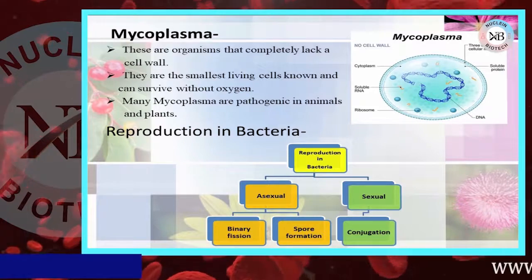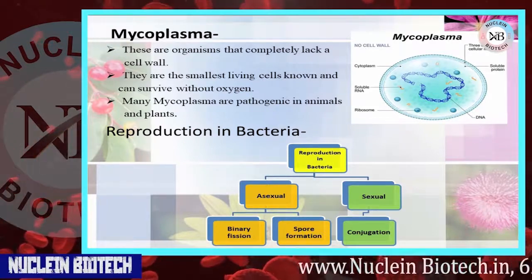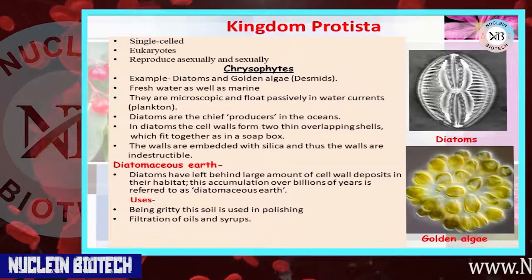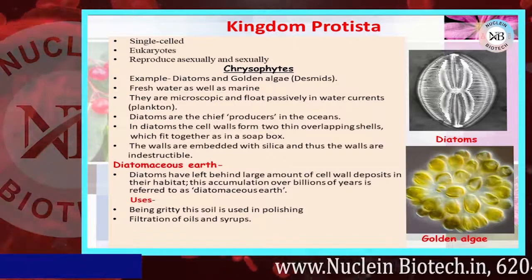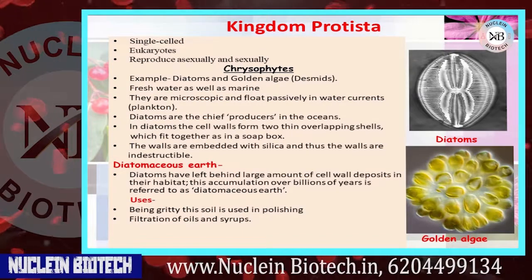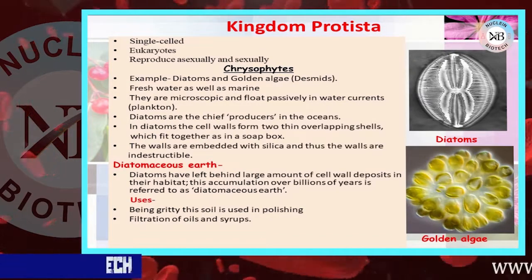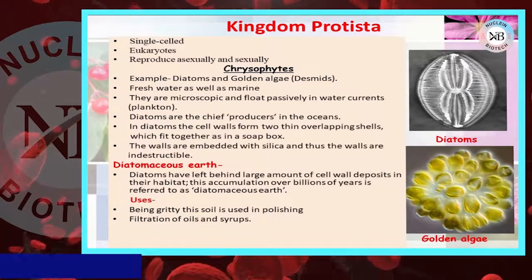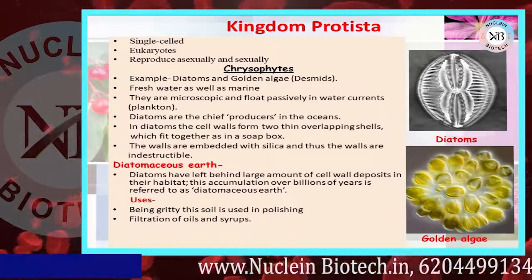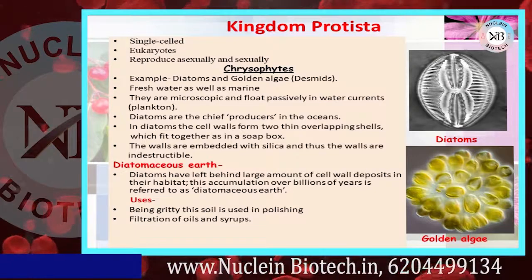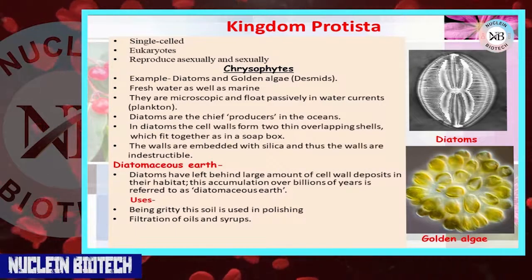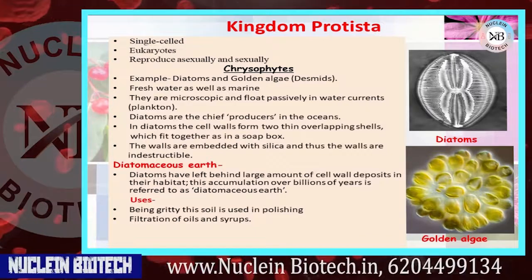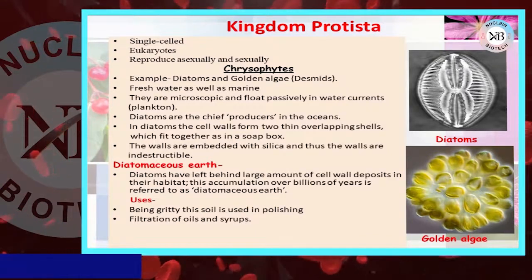Next, Kingdom Protista consists of single-celled eukaryotic organisms that reproduce both asexually and sexually. Chrysophytes include diatoms and golden algae found in fresh water as well as marine environments. They are microscopic and float passively in water currents.